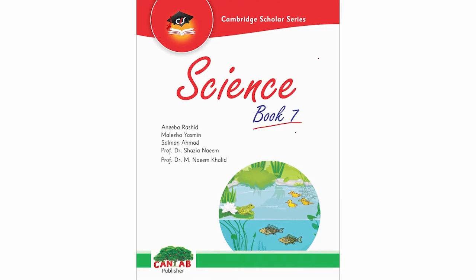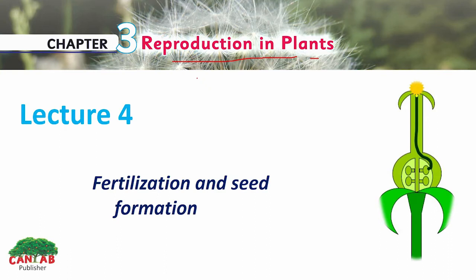Today's lecture is from Science of Grade 7. In Grade 7, we have been discussing Chapter 3, which is about reproduction in plants. Reproduction is the process by which characters are transferred and preserved in next generations. Plants transfer their characters to next generations by two means: asexual reproduction, which we discussed in Lecture 3, and sexual reproduction, the last step of which we are going to discuss in Lecture 4.